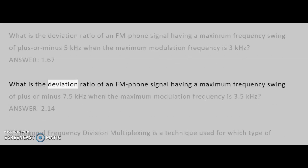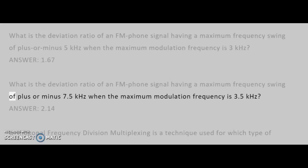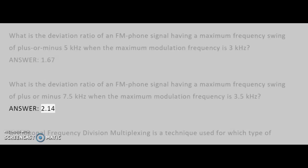What is the deviation ratio of an FM phone signal having a maximum frequency swing of plus or minus 7.5 kHz when the maximum modulation frequency is 3.5 kHz? Answer: 2.14.